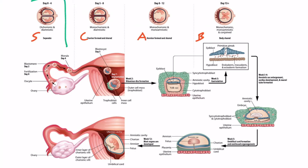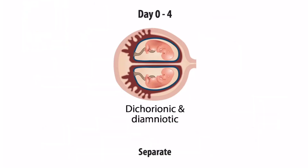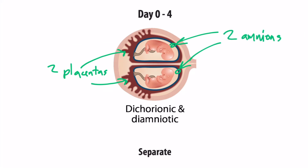The first stage: if division occurs while the embryo is in the two-cell stage, or blastomere stage, all the way to the morula stage, they will be totally separate. The division occurred early enough that the amnion and chorion can still develop individually, so each twin can have their own placenta and own amniotic sac. They will be dichorionic and diamniotic. Zooming in, we can clearly see two distinct placentas and two amnions shown by the blue line.